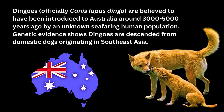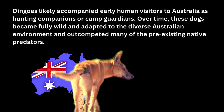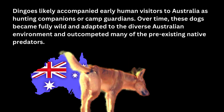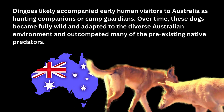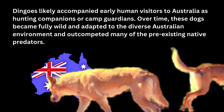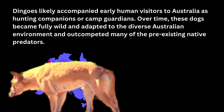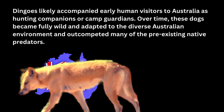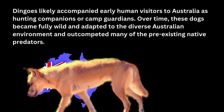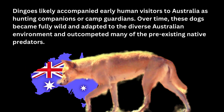Dingoes, officially Canis lupus dingo, are believed to have been introduced to Australia around 3,000 to 5,000 years ago by an unknown seafaring human population. Genetic evidence shows dingoes are descended from once-domesticated dogs originating in Southeast Asia. Dingoes are not commonly thought to have been brought to Australia to serve a specific ecological or economic purpose, but rather they are thought to have accompanied these early human visitors as hunting companions or camp guardians. Over time, these dogs became wild and adapted to the diverse Australian environment, outcompeting many of the pre-existing native predators.